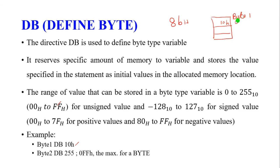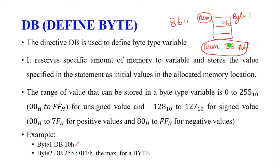Another example: if you define a variable with any chosen name such as 'ANNUM DB 110h', the address of that memory location is referenced by that name. The maximum value that can be stored is FFh, which is 255 in decimal. The memory location named BYTE2 stores the value FF, defining the maximum byte value.